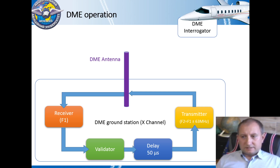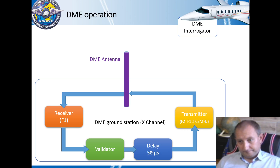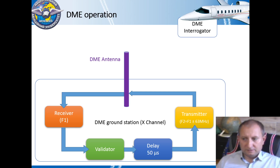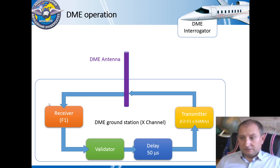Let's discuss DME operation in more detail. A common DME ground station consists of an antenna, receiver, transmitter, validator, and specific equipment to generate delay. The DME interrogator located onboard the aircraft transmits an interrogation pulse pair signal. After traveling through space, the interrogation signal is received by the DME antenna of the ground station. The receiver demodulates the received signal and sends it to the validator, which checks whether the received pulse pair is a valid DME signal.